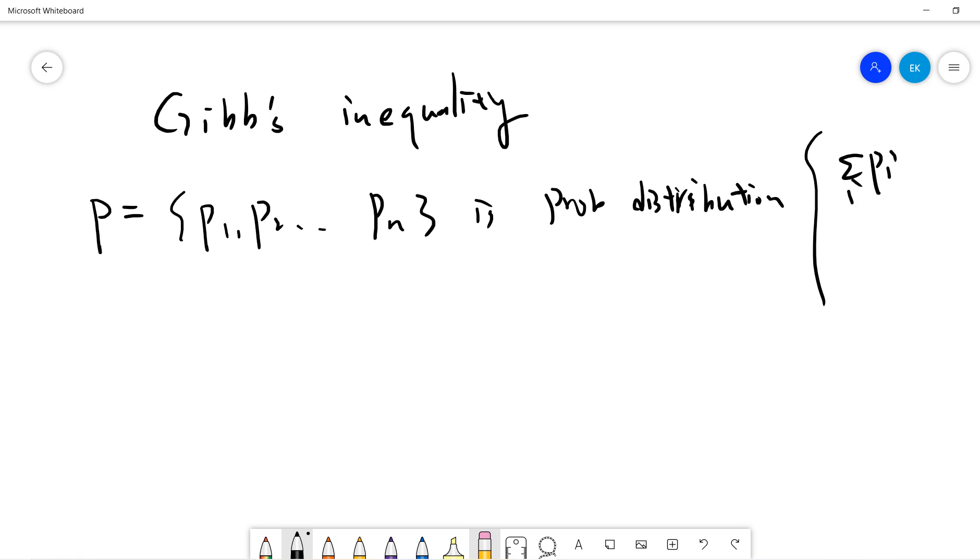The sum is 1, and each is also greater or equal to 0. And also we have Q, right? It's also a probability distribution: Q1, Q2, up to Qn. It's also a probability distribution where the sum of Qi is 1 and each Qi is greater or equal to 0.